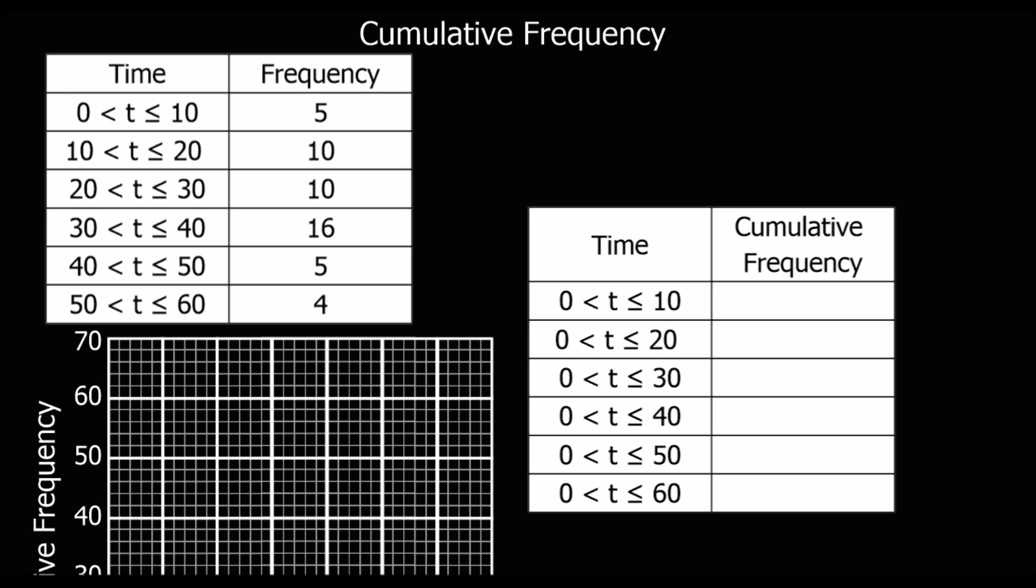Okay, so whenever we've got cumulative frequency, the numbers are accumulating as they're going along. So we're adding them up as we're going along. It's a running total.